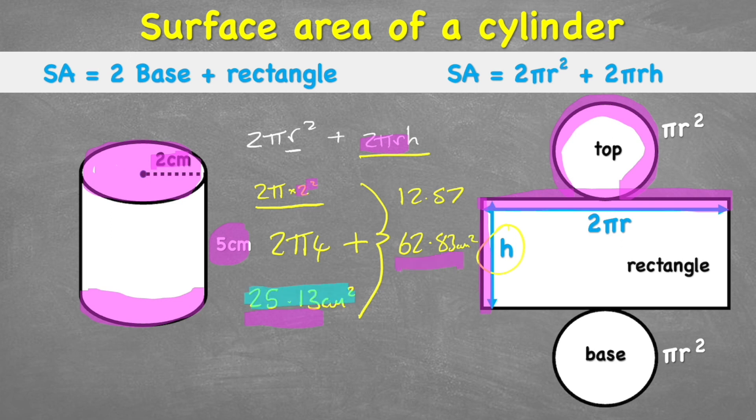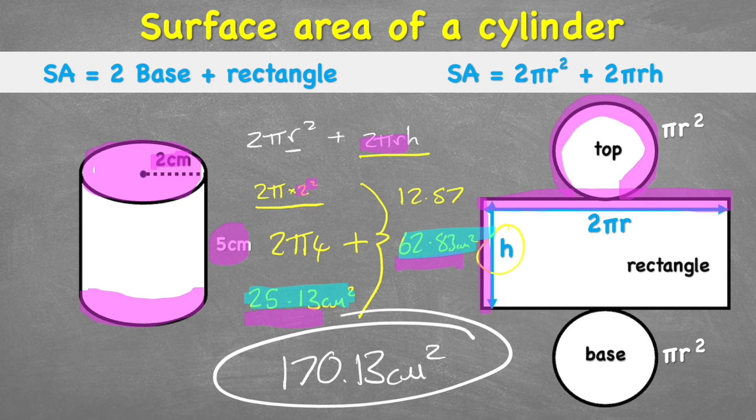so now I have the area of my two circles, the top and the base, and the area of my rectangle. All I need to do now is add the two together to get my total. So 25.13 + 62.83. And the answer is 170.13 centimeters squared. And there's my final answer.